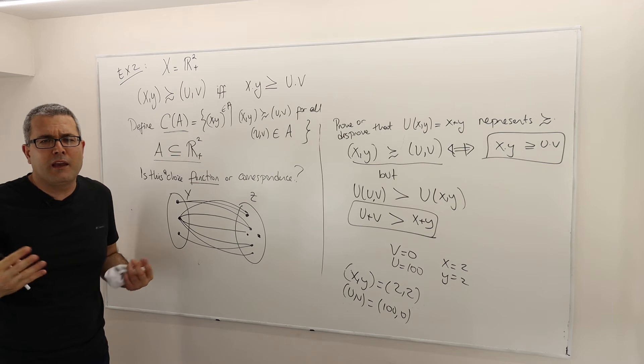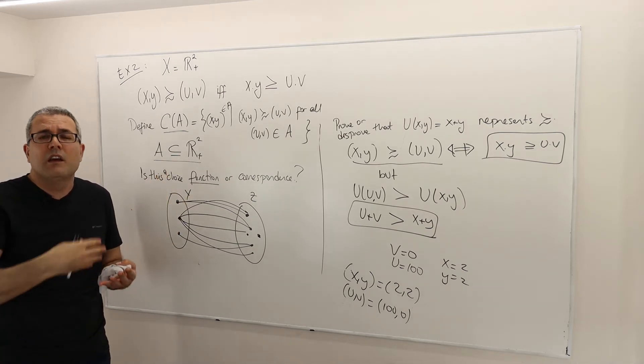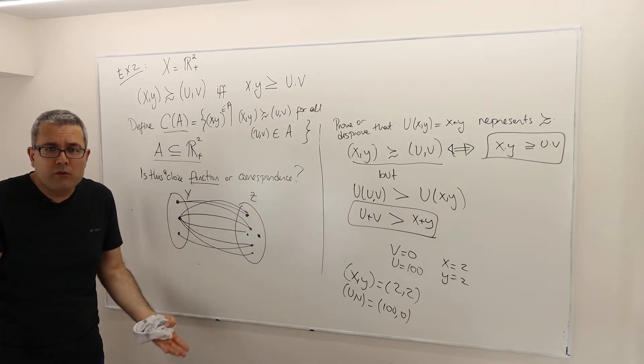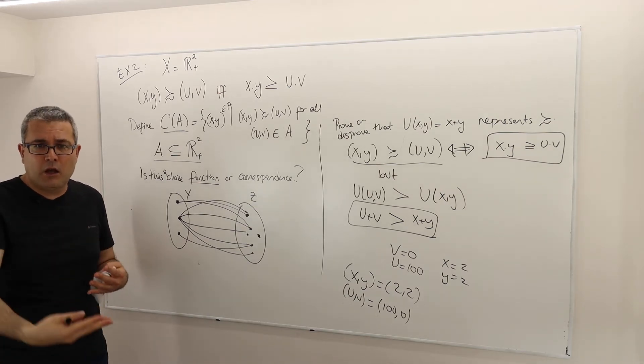So some of you may say, hey, this is not therefore a function. Yes, it is not a function. It is what we call a correspondence. It is still, by the way, a valid mathematical object. We call them correspondence.